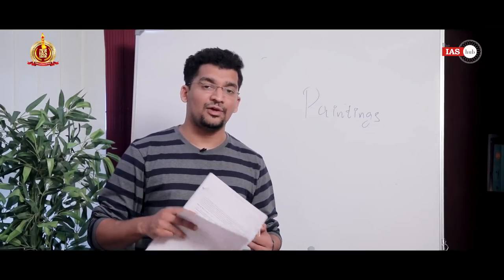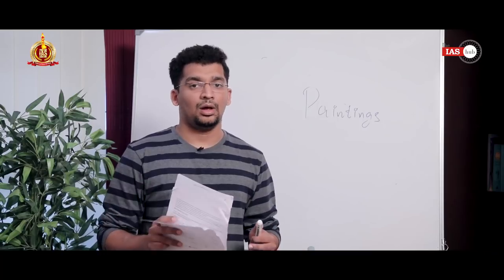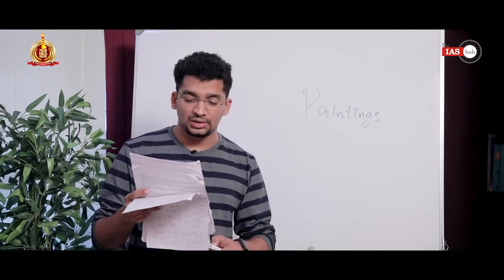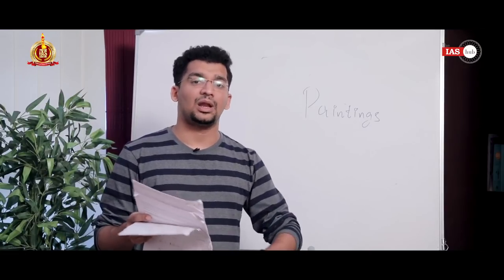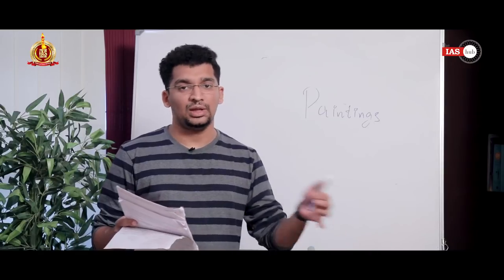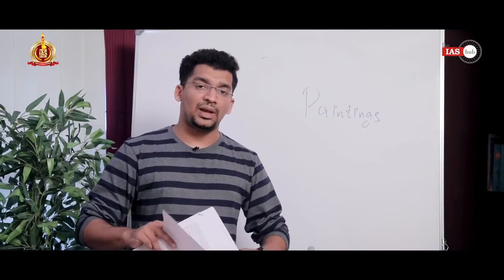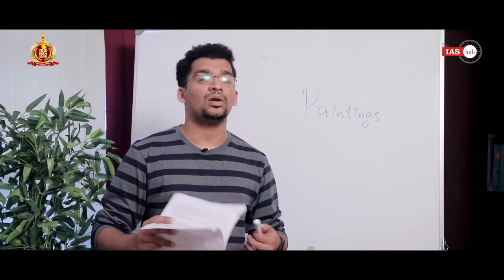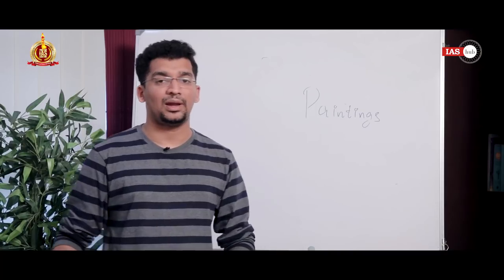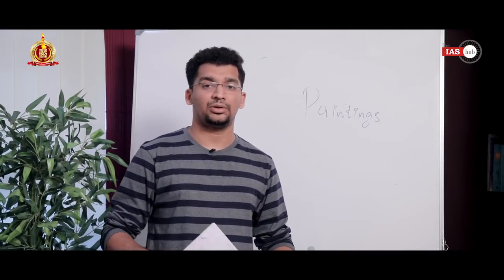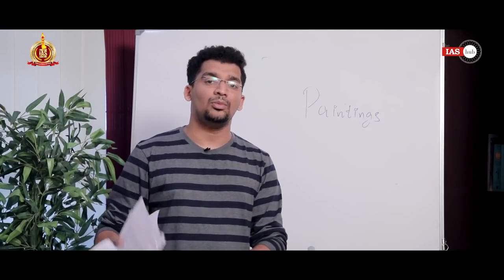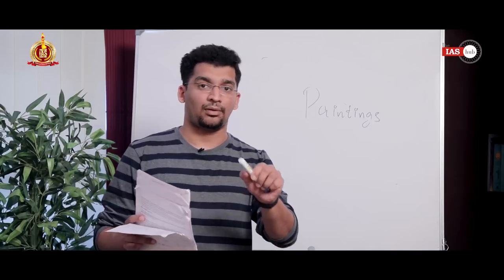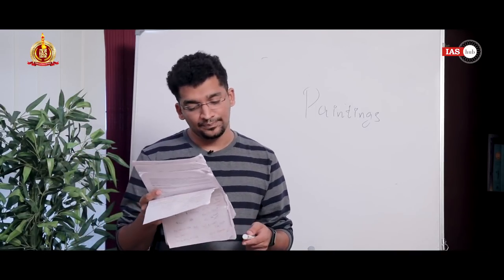Statements one and three are correct. Regarding statement two: the themes did multiply from the Upper Paleolithic to the Mesolithic period, but the size of the paintings did not grow larger — it became diminishing, becoming smaller and more realistic. The initial rudimentary paintings had no correct proportion, but as the period moved on, the size decreased. Statement two says there is an increase, which makes it wrong. The answer to question one is C — one and three only.